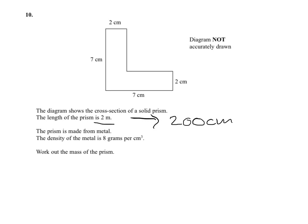To work out the volume of a prism, remember that volume equals the area of the cross-section times the length. So the volume will be the area times 200. We need to work out the area of the cross-section.